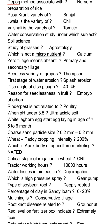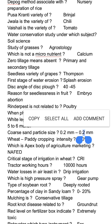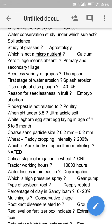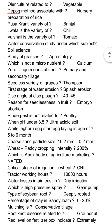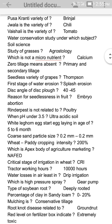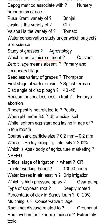Water retention is highest in drip irrigation. The high pressure spray gear pump type is used in sprinkler systems. Soya bean root is deeply rooted. The percentage of clay in sandy loamy soil is 20 percent. Mulching is a conservative tillage technique. Root rot disease is related to groundnut. A red level on the fertilizer box indicates extreme toxicity. Thank you friends, have a nice day — please like and share my channel.